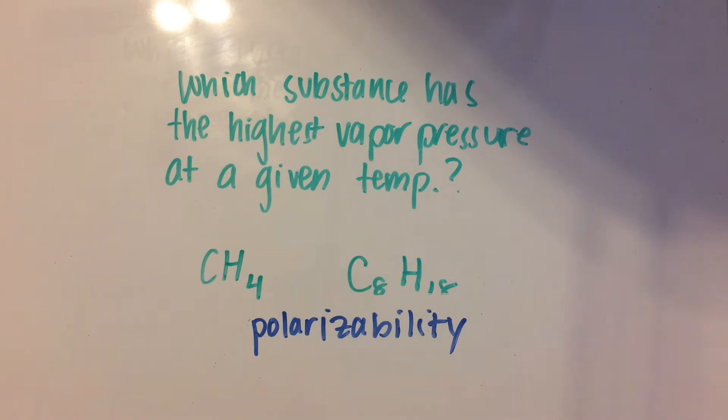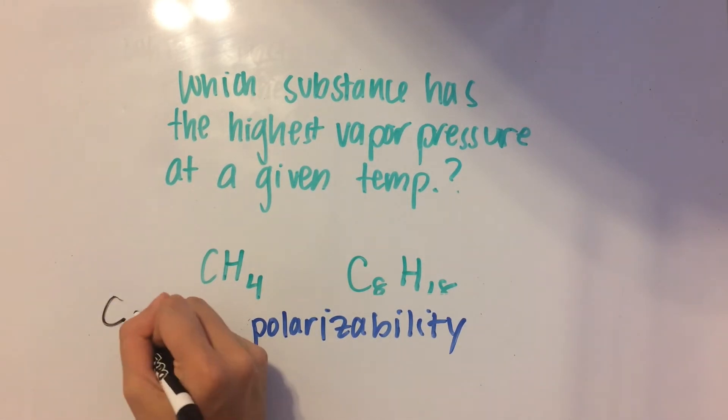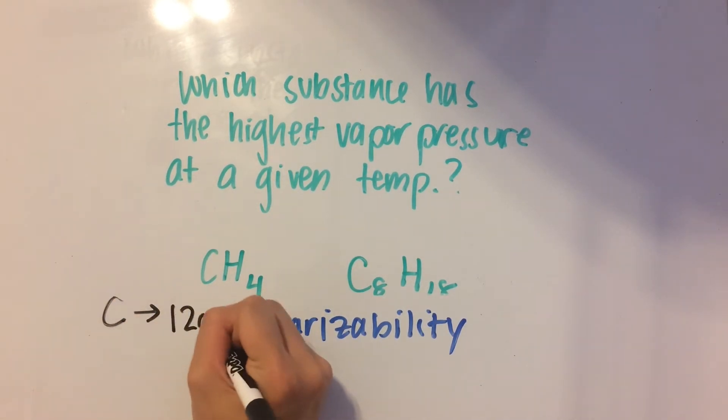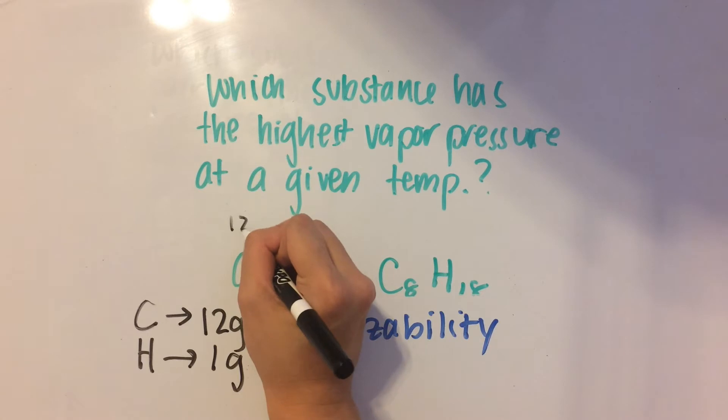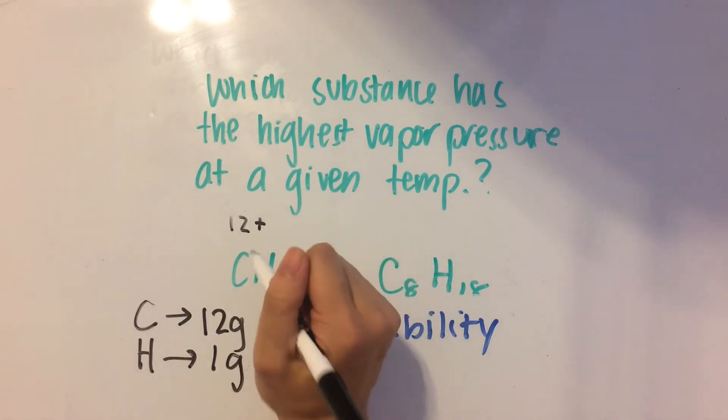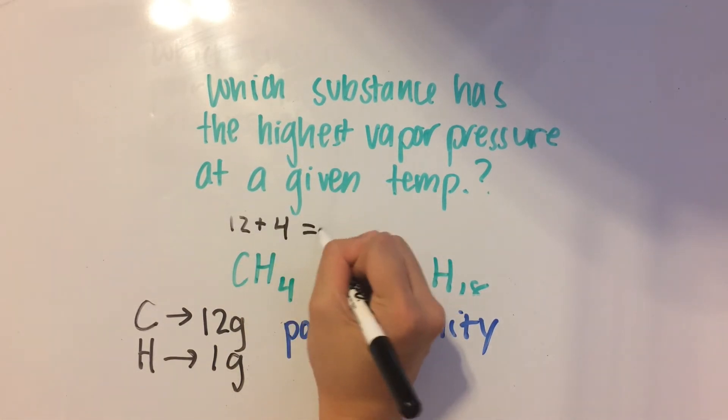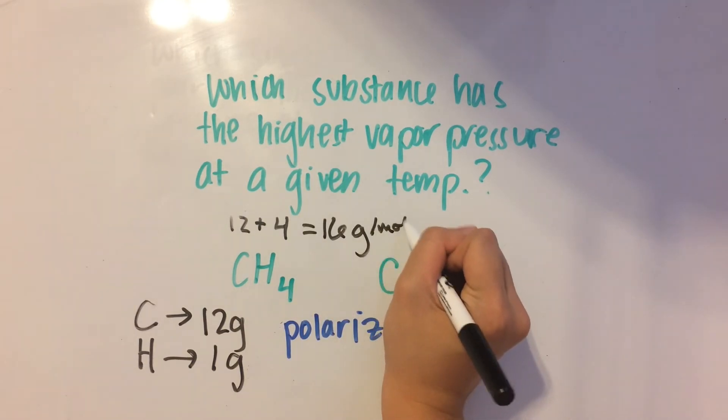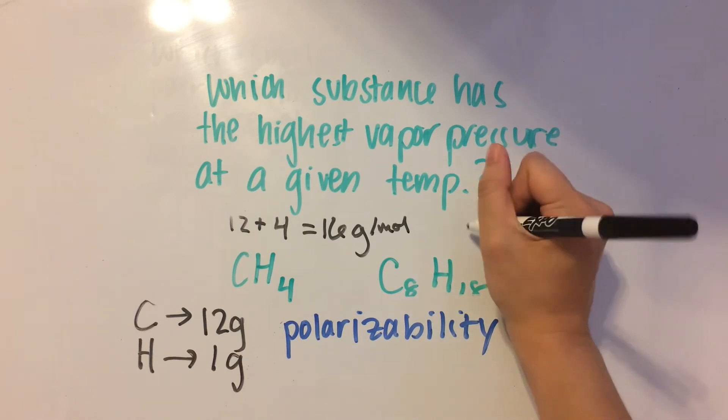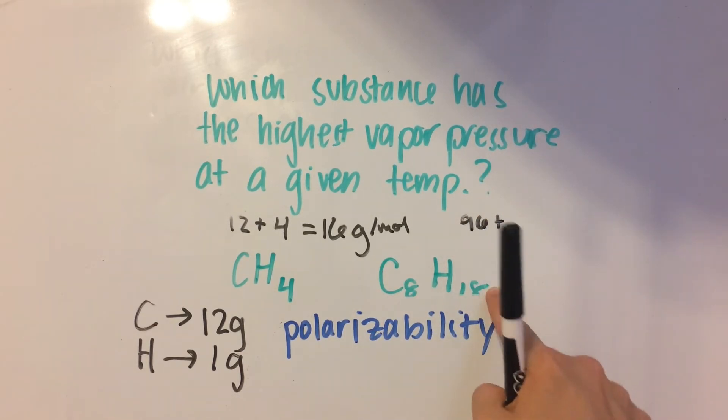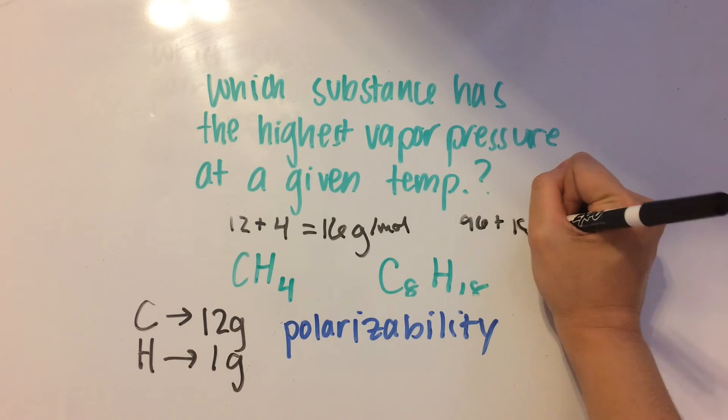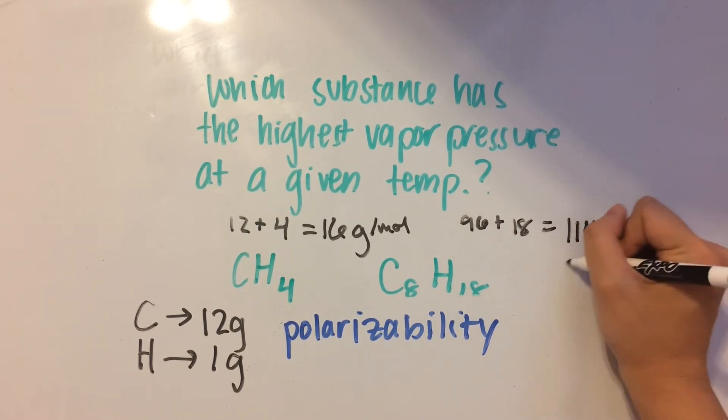So what we do to measure out polarizability is look at the molar mass of the atoms in each molecule. Carbon has a molar mass of 12 grams, and hydrogen has a molar mass of 1 gram. We have 1 carbon, so that's going to be 12, plus 4 hydrogens, and each one of them is 1 gram. So that's going to be 4, giving us a molar mass of 16 grams per mole. Then carbon, 8 times 12 is 96, plus 18, because we have 18 times 1, and that's going to give us 114 grams per mole.